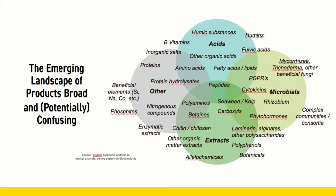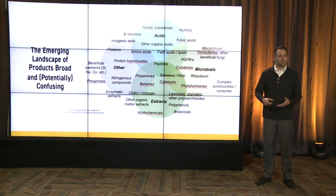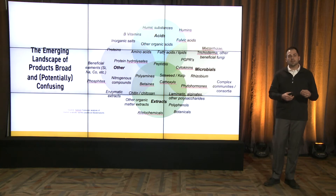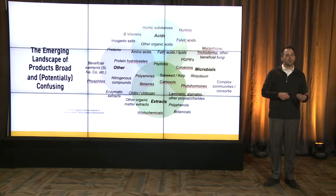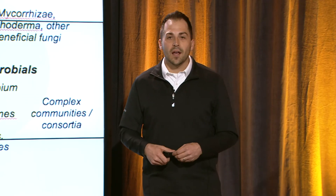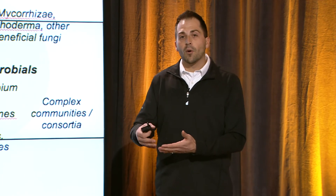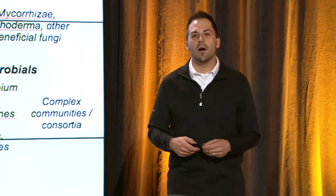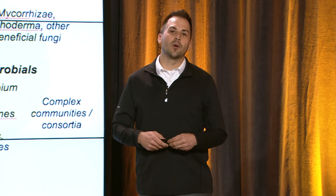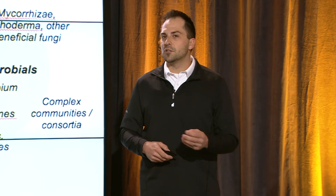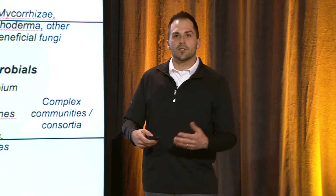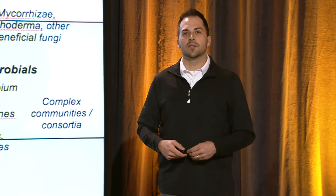But what about the future? There's such an emerging landscape of products coming down the pipeline that we can often get confused, but there's a lot of potential and exciting things coming. For instance, humic acids or humic substances can have a positive impact on the soil's ability to hold nutrients. And seaweed or kelp, as it breaks down, feeds the biology that are important in that nitrogen conversion process.